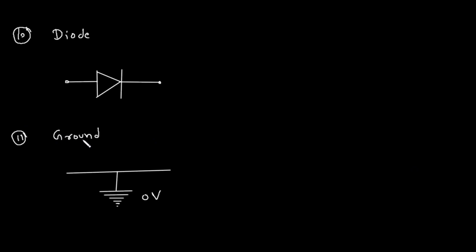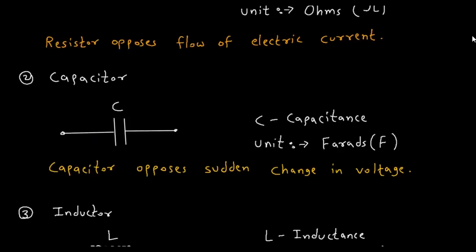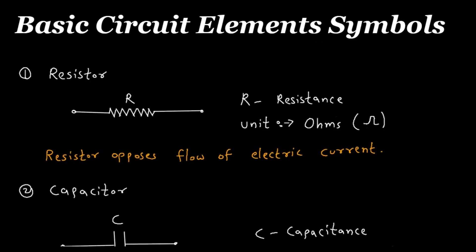Then next is ground. Ground is represented by this type of lines, and it is a reference voltage which has a value of zero volts. So this is the symbol for ground. Don't forget to like, share, and subscribe to this channel. Thanks for watching.